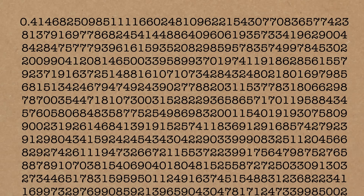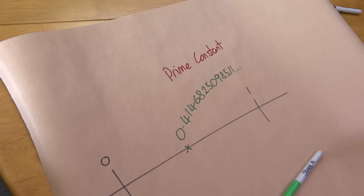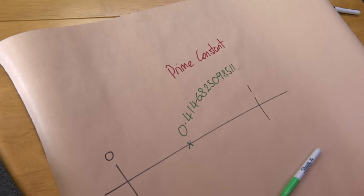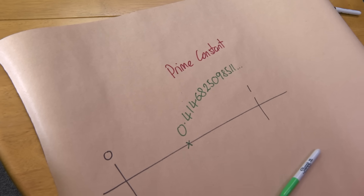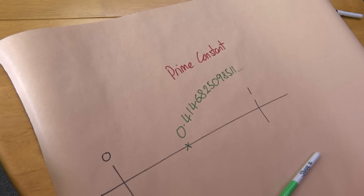Pi is the circle constant, e is the exponential constant — this is the prime constant. And it's a number that represents all the primes. Every single prime.